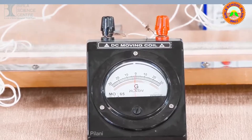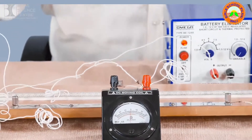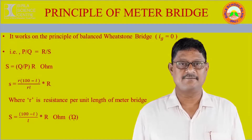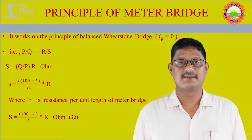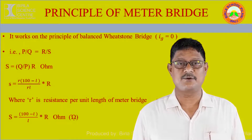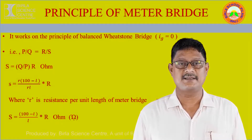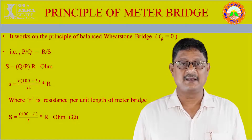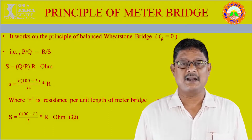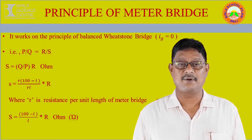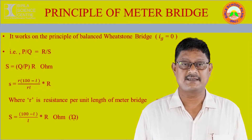When 95 is subtracted from 100, the length from the right is 5. So P upon Q equals R upon S. After getting the null point, we apply the balanced Wheatstone Bridge formula: P by Q equals R by S. Taking S as the unknown resistance, S equals Q upon P into R. Q and P represent the lengths of the meter bridge wire. Each length is multiplied by small r, which represents resistance per unit length of the meter bridge wire, giving the formula: S = (100 − L) / L × R. That is the value of the unknown resistance.